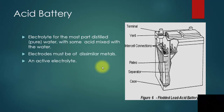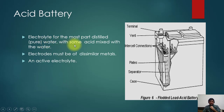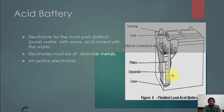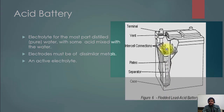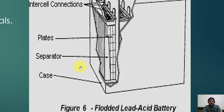Now we move to secondary batteries — specifically acid batteries. The electrolyte is mostly distilled pure water with some acid mixed in. The electrolyte must consist of dissimilar metals in an active electrolyte. In this example of an acid battery, you can see a vent provided here to release gases, an inter-cell connection, and the plates with a separator between them.